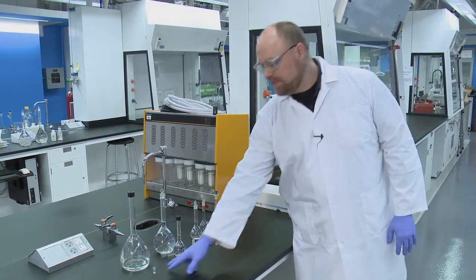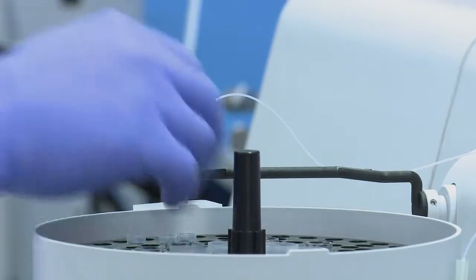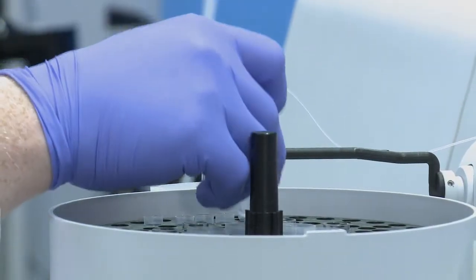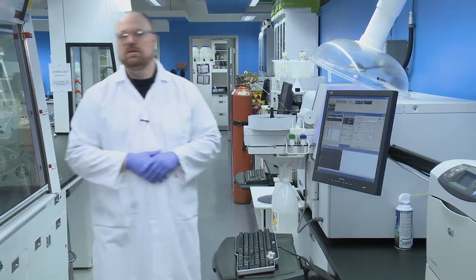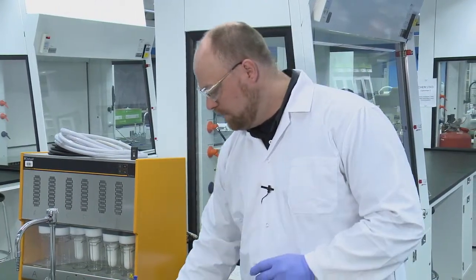you're going to take the sample vials and you're going to load them into the auto sampler of the spectrometer, putting them in the correct position that's given in your lab manual or by your TA or the lab coordinator.